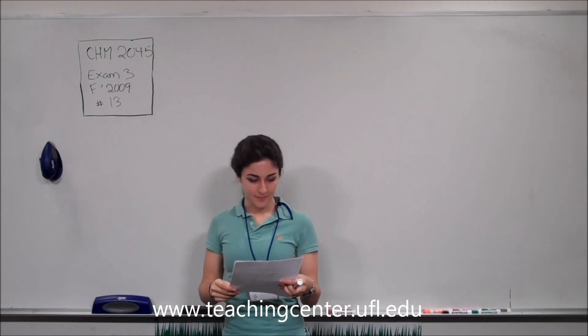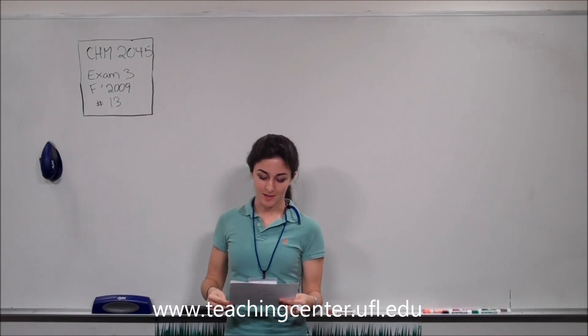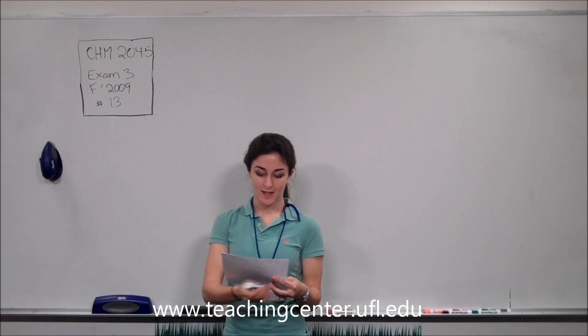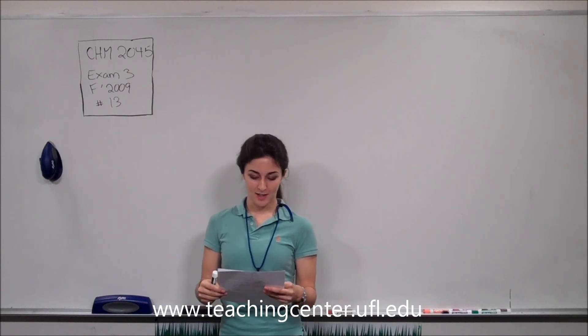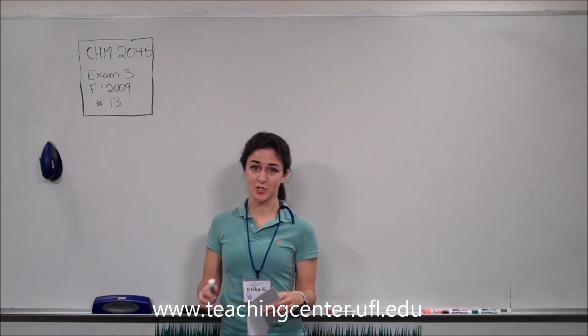This problem says that magnesium metal, 0.1 moles of it, and a volume of hydrochloric acid, which has 0.5 moles, is combined and reacted. They give us a chemical equation to show the reaction, and they want us to find out how many liters of hydrogen are produced at standard temperature and pressure.